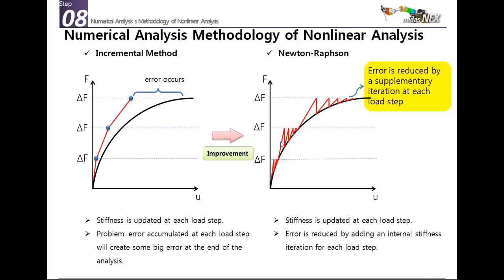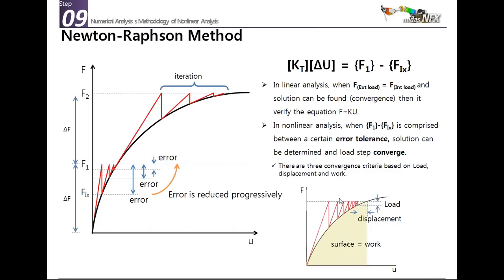The first improvement is the Newton-Raphson method. It introduces a supplementary iteration at each load step, doing additional iterations to get closer to the curve and reduce the error to near zero. On each load step, you have a first iteration, then several increments until it converges and reaches the curve. At each increment, the error is reduced progressively until convergence is reached.